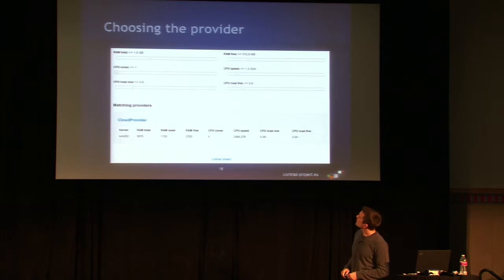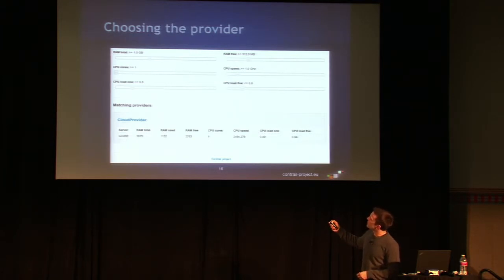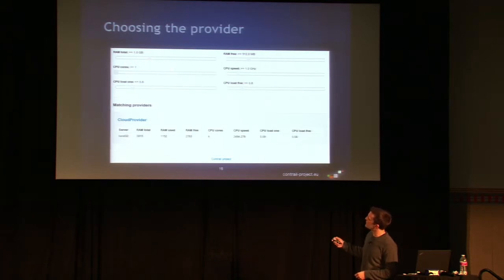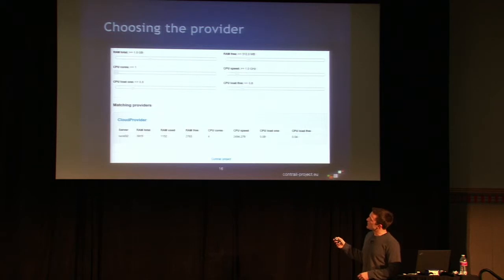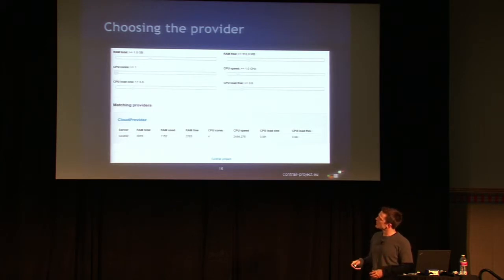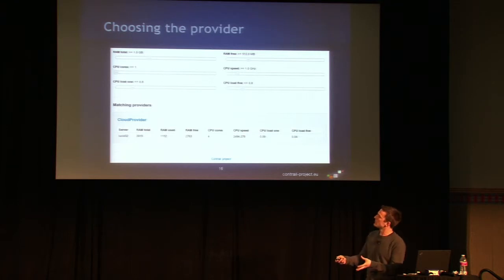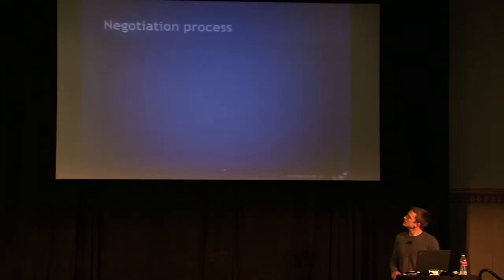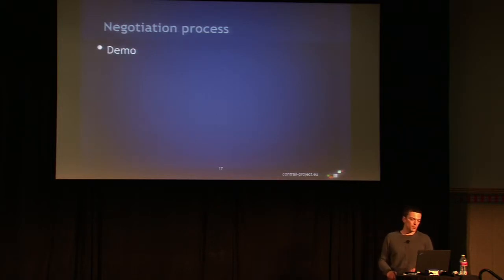The user interface will be shown with an online demo in a few moments. We have sliders where we can specify terms on the provider, and these terms are then used to filter out providers which fulfill those terms. At this point this step is manual, but in later releases this will be abstracted from the user — the provider will be chosen optimally for the terms and for the amount of money the user wants to pay for the deployment.